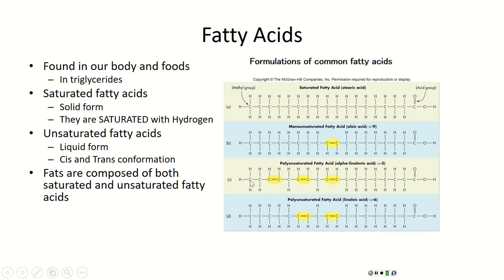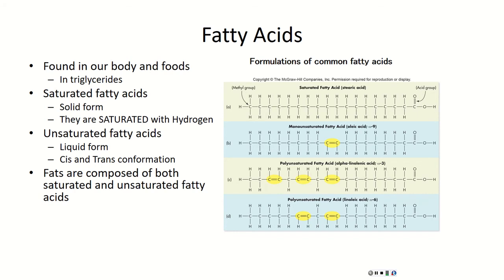From the omega side, counting one, two, three back — that first carbon is our omega-3, because it's the third carbon from the omega side that is missing a saturated bond point. On the bottom one in section D, counting six carbons back from the omega side — this is an omega-6, because the sixth carbon is not saturated with hydrogen atoms. So we can see three different types of omegas: omega-3, omega-6, and omega-9. The reason we never hear about omega-9 is that your body makes it on its own — it doesn't need it from an outside source. Whereas omega-3s and omega-6s require an external source.